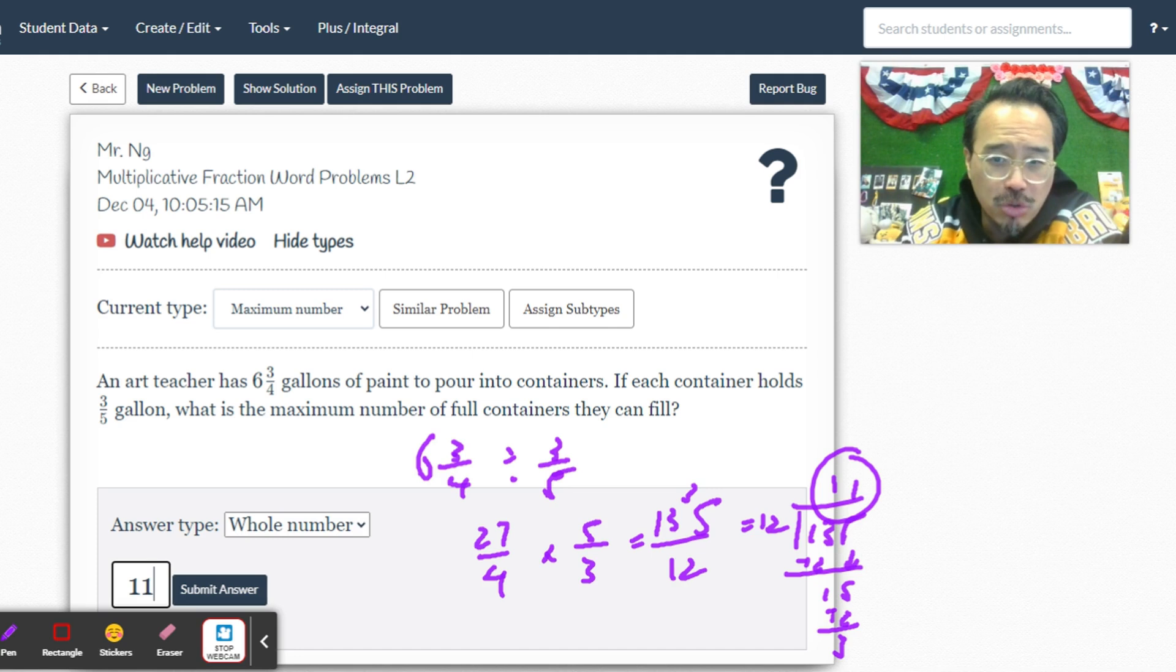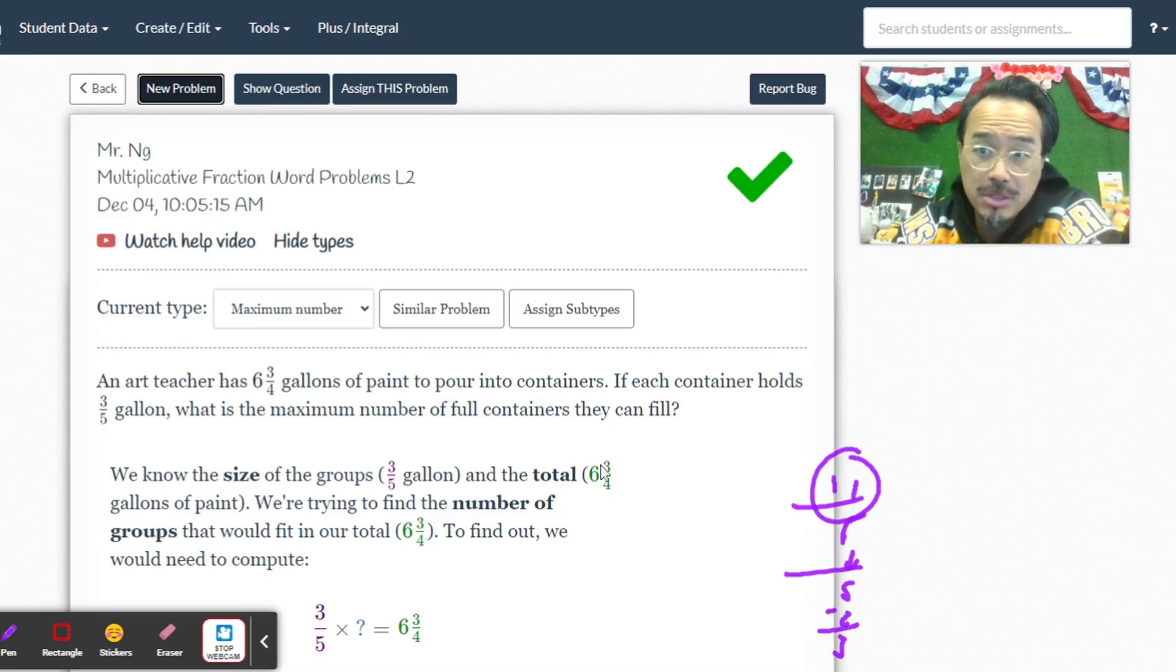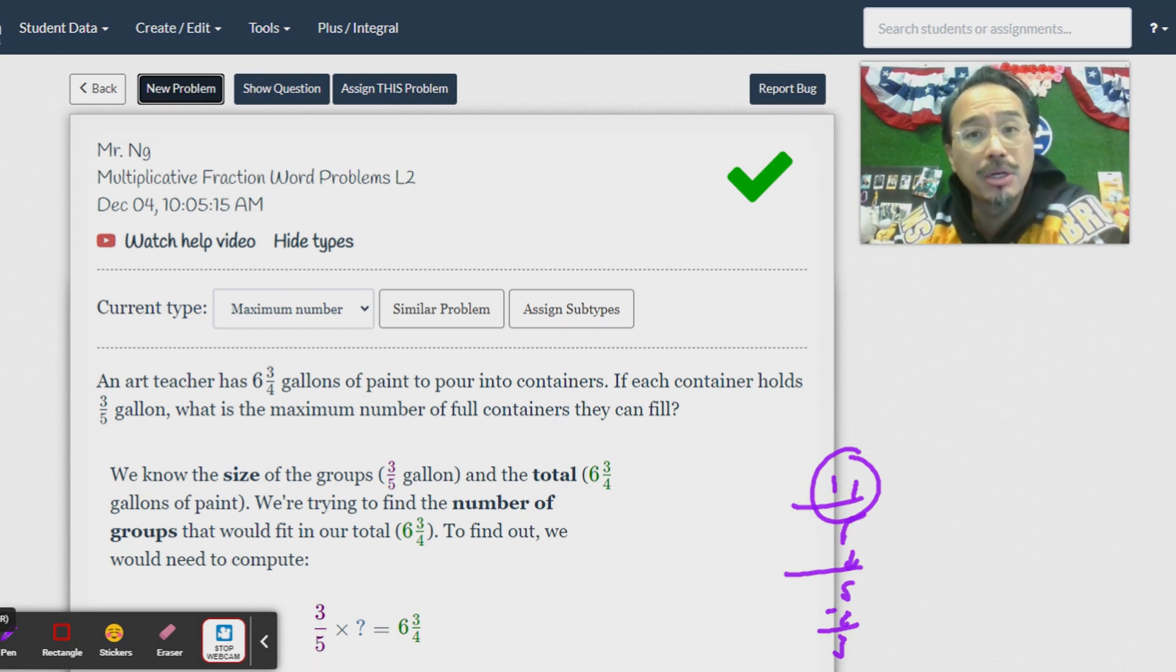So that's the whole number I'm looking for: eleven. You can have 11 full containers with three-twelfths left over. That's it, that's all the homework this week. Thanks for watching, have a good night. I'll see you guys tomorrow in class.